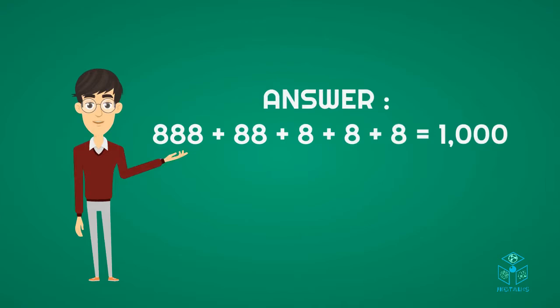The answer is 888 plus 88 plus 8 plus 8 plus 8 equals 1000.